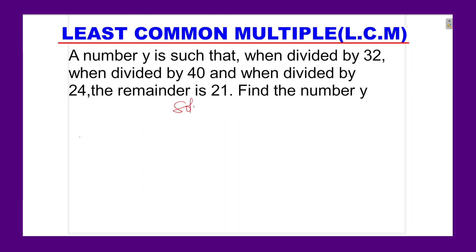Let's go to the solution. Now you're supposed to find the value of the number y. You're given that when that number y is divided by 32, when divided by 40, and when divided by 24, it leaves a constant remainder, which is 21.